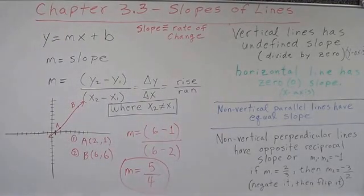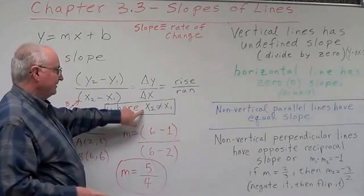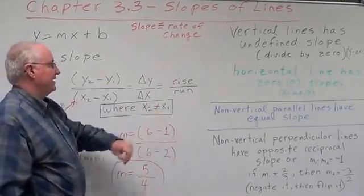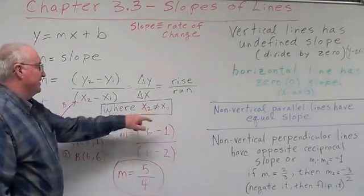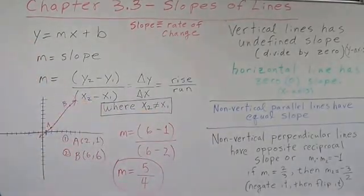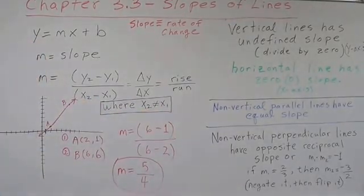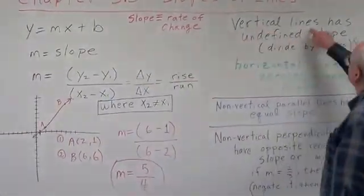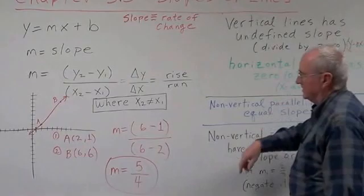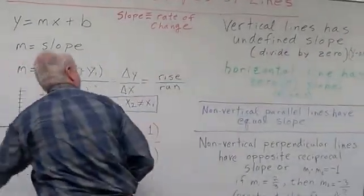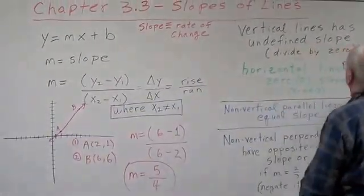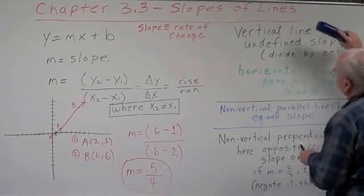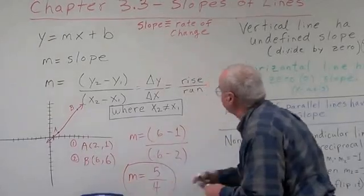Now we have a caveat or a watch out: x2 cannot equal x1, because if x2 equals x1 this becomes zero. Division by zero simply doesn't work. If you had division by zero, vertical line has undefined slope. It's divided by zero. The y-axis is an example.